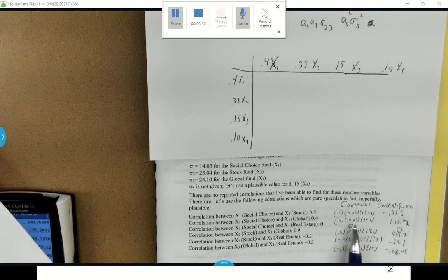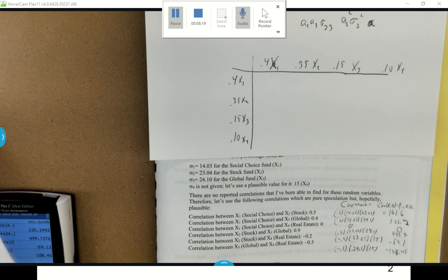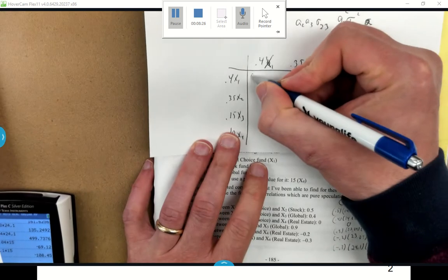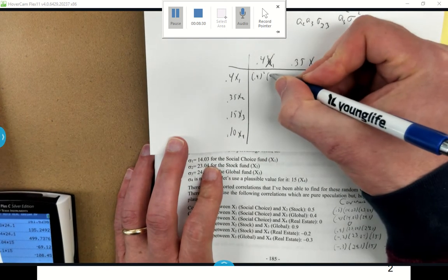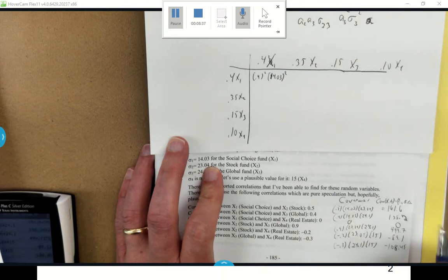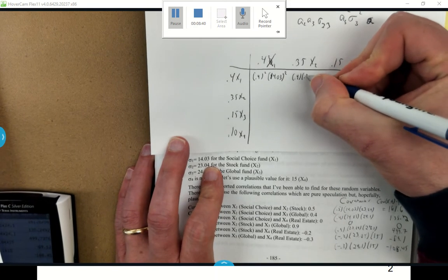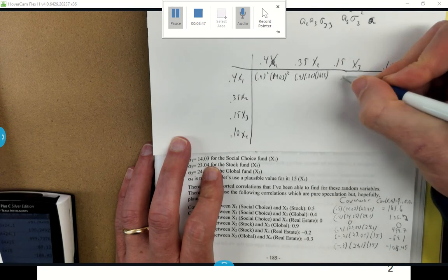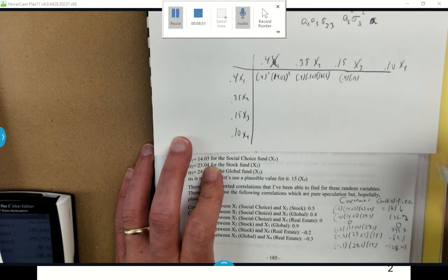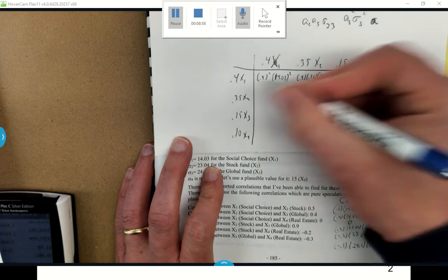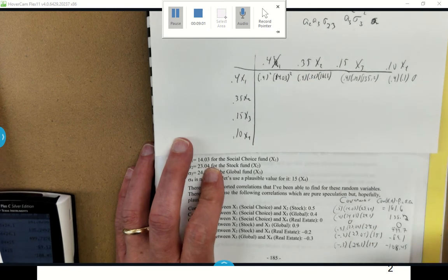I multiplied all of these terms together to get the covariances for each one. Now let's fill in my matrix chart. What I'd end up getting is 0.4 squared times 14.03 squared, because the variance is just the covariance if you have the same variable. And this would be 0.4 times 0.35 times its covariance 161.6. And then 0.4 times 0.15 times its covariance 135.2. And then 0.4 times 0.1, and X1 X4 turns out to be that it has a zero.